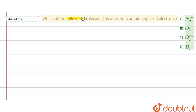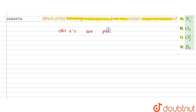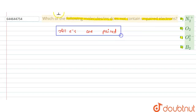Which of the following molecules or ions does not contain an unpaired electron? That means all electrons are paired. The question asks: in which of the following species are all electrons paired? We check this using Molecular Orbital Theory, or directly — if the total number of electrons is odd, there is definitely an unpaired electron.